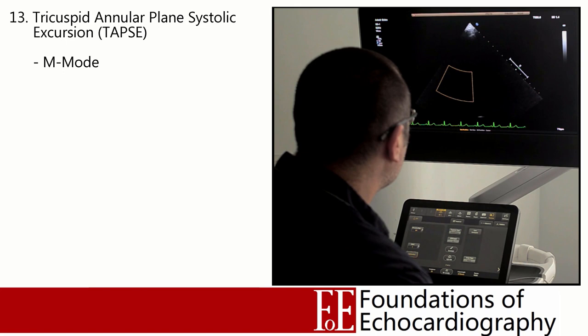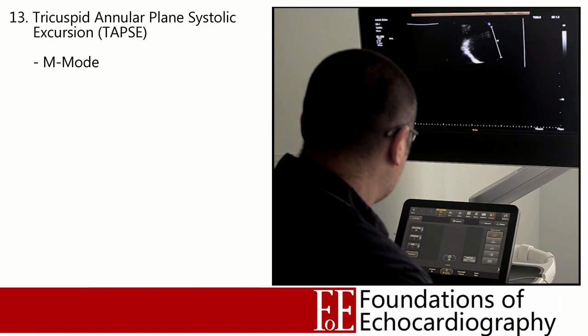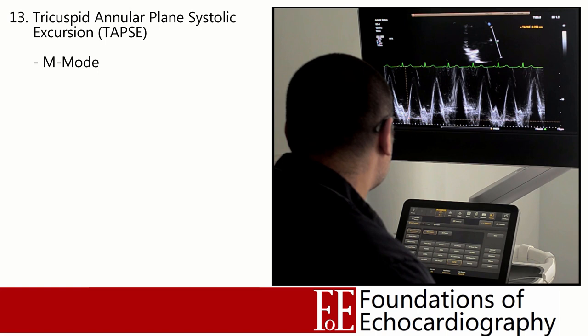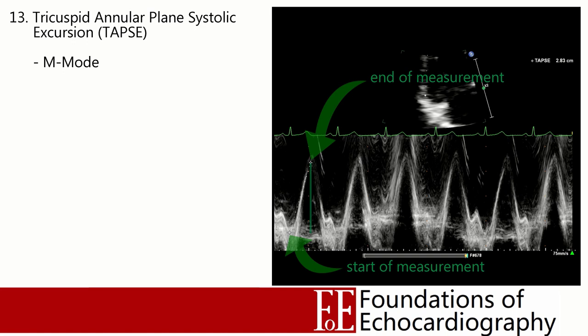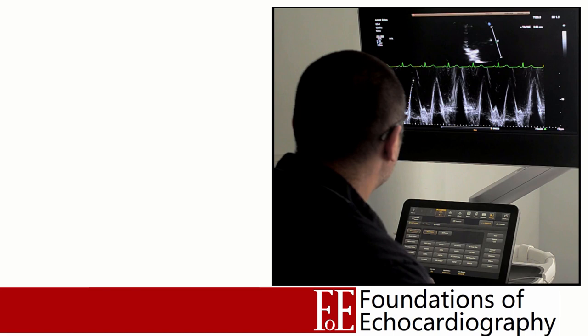A key measurement for assessing right ventricular function is the tricuspid annular plane systolic excursion, or TAPSE — how far the tricuspid annulus is pulled towards the apex during systole. Zoom in on the tricuspid lateral annulus, place the cursor through it and generate an M-mode graph. Identify the line best representing the tricuspid lateral annulus, which moves towards the near field during systole and away during diastole. Measure the y-axis value from trough to peak; the software calculates this automatically. In our model we have a TAPSE of 28mm, well above the lower limit of 17mm — clearly normal.